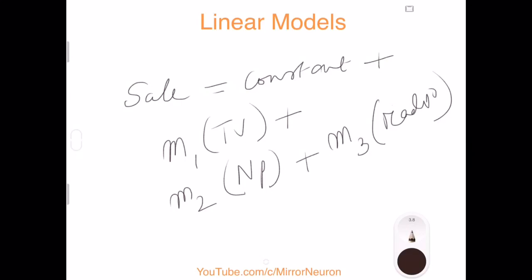This is what we are hoping—that there will be a linear relationship. But as we saw in the data, the newspaper doesn't follow a linear relationship. So later on we'll see why a linear regression model may not always work. But at least you got the idea of what it means by linear models. Again, thanks for watching and please continue to support us on our channel Mirror Neuron, which means watch and learn. Thanks.